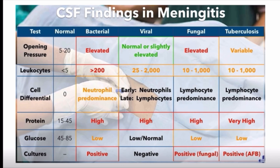CSF findings in meningitis: opening pressure (normal 5–20) is elevated in bacterial and fungal, normal or slightly elevated in viral, and variable in TB. Cell count: bacterial shows polymorphs; viral, fungal, and TB show lymphocytic predominance. Protein (normal 15–45) is raised in all conditions, especially very high in TB. Glucose (normal 45–85) is reduced in bacterial, fungal, and TB; mostly normal in viral. Cultures: positive for bacteria, AFB positive in TB, fungal elements positive; viral generally negative.